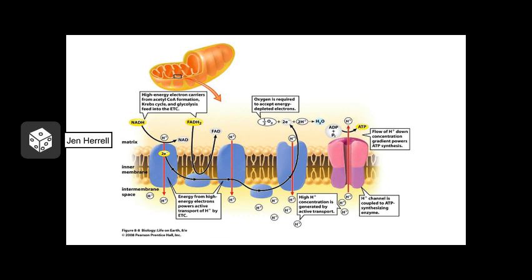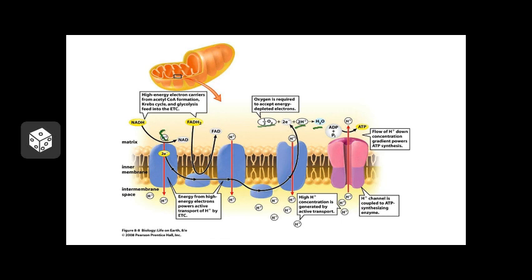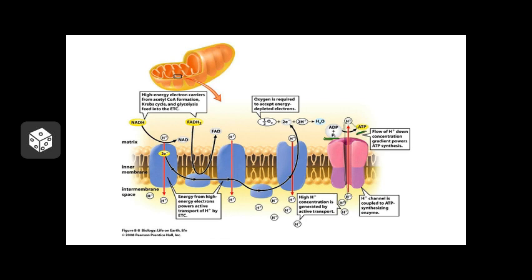Here's the whole electron transport chain all together. First, energy carriers including NADH and FADH2 drop off their electrons into the chain. The electrons flow through from one protein to the next until they pass out the other side, leaving behind energy that allows the proteins to do their work. At the end of the chain, oxygen gas grabs those electrons, interacts with some hydrogen, and forms water as a byproduct. The chain acts as a hydrogen pump — it grabs hydrogen ions from the matrix and pumps them into the inner membrane space, forming a hydrogen gradient. Finally, that gradient powers ATP synthase: as hydrogens flow back from the inner membrane space into the matrix through the enzyme, it energizes it and converts ADP into ATP.